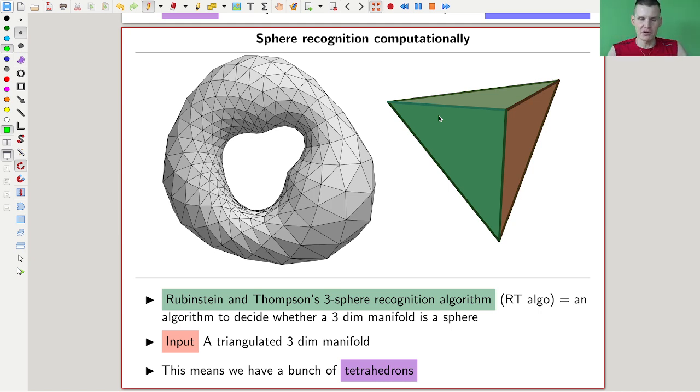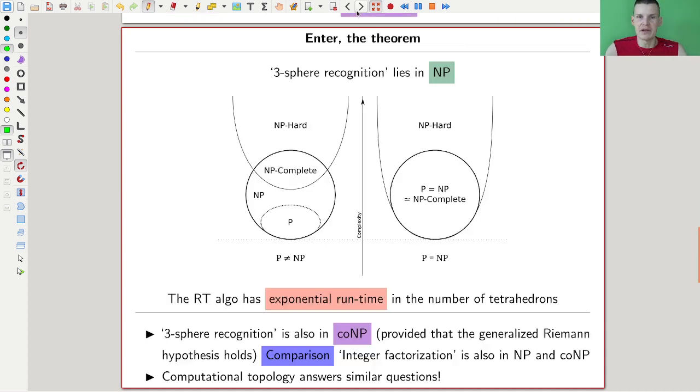This is a prototypical example of what computational topology does. It takes abstract questions like the Poincaré conjecture, the Poincaré question, and tries to answer it computationally, tries to use algorithms.